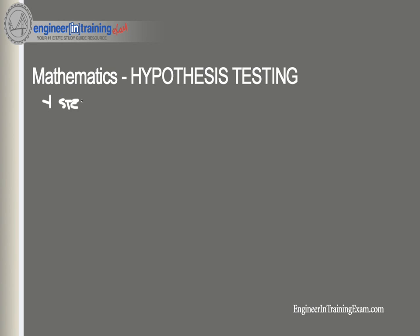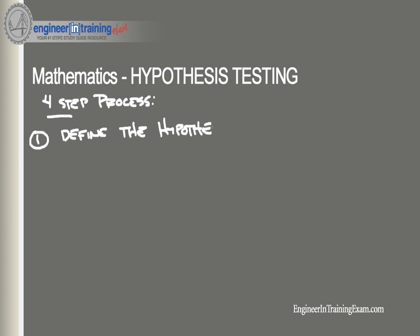Hypothesis testing can be broken down into a four-step process. Step number one requires that we state a null hypothesis and an alternate hypothesis. We define a null hypothesis and an alternate hypothesis. The hypotheses are stated in such a way that they are mutually exclusive — that is, if one is true, the other must be false.